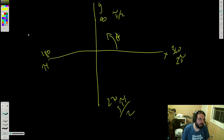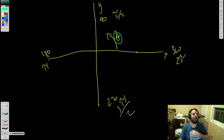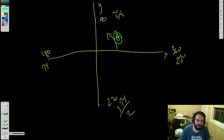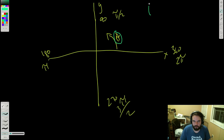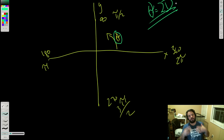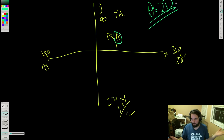Khan Academy uses lots of colors, so let's do the same. Rotations in two dimensions is just theta. Once you have theta, you're representing all the rotation you could possibly want in two dimensions — you're set, you're good to go.